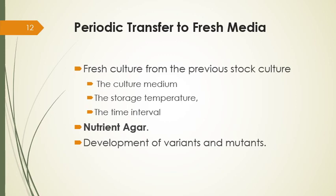Strains can be maintained by periodically preparing a fresh culture from the previous stock cultures. The culture medium, the storage temperature, and the time interval at which transfers are made vary with the species and must be determined in advance. The temperature and type of medium should support a slow rather than rapid rate of growth so that the time interval between transfers can be as long as possible. Many common heterotrophs remain viable for several weeks or months on a medium like nutrient agar. However, this transfer method has the disadvantage of failing to prevent changes in the characteristics of the strain due to the development of variants and mutants.